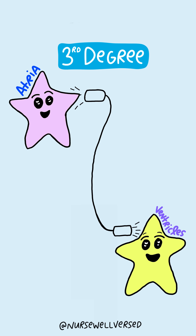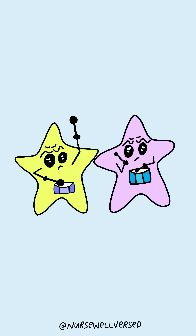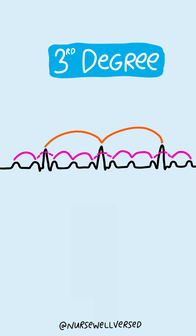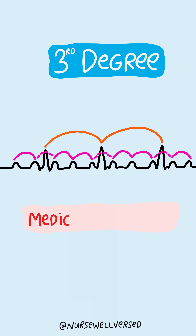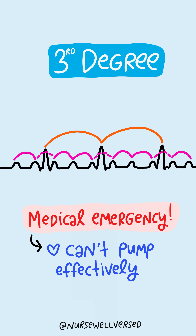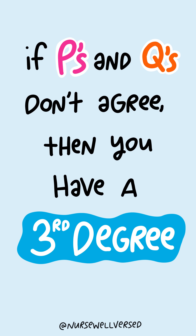A third degree heart block is when there's a complete loss of communication between the atria and ventricles — commonly said that the ventricles and atria are both marching to the beat of their own drums. On the EKG, the P waves and QRS complexes will both be consistent but won't line up with each other at all. This is considered a medical emergency because the heart won't be able to pump blood effectively. A simple rhyme for this is: if P's and Q's don't agree, then you have a third degree.